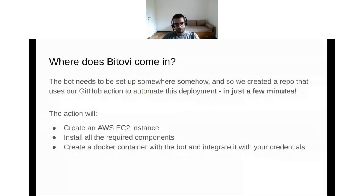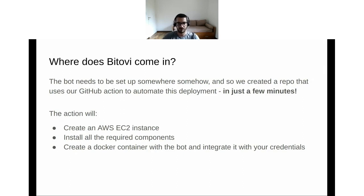So, where does Bitovic come in? The bot needs to be set up somewhere, somehow. We created a GitHub action — in fact, we have a repo for that — that will automate this deployment for you in just a few minutes. The action will create an AWS EC2 instance, install every required component it needs, and create a Docker container with the bot. Of course, it will need to be integrated with your credentials.